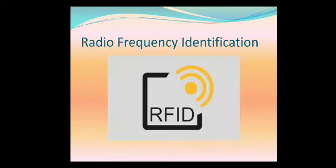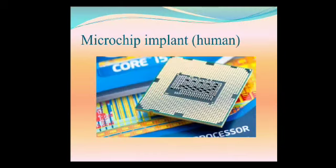Radio frequency identification uses the electromagnetic field to automatically identify and track the tags attached to objects. Microchip implant contains a unique identification number that can be linked to the information contained in an external database, for example, personal identification.